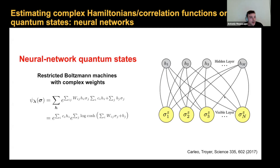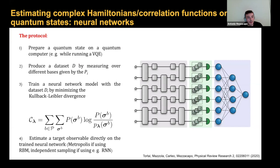It's a parameterization of the amplitude of a wave function expressed in terms of a neural network with complex weights. The neural network in this case is a restricted Boltzmann machine — a shallow neural network. What they showed three years ago is that this variational ansatz does a fairly good job at capturing ground state properties of interacting many-body systems. Why is this interesting, and what does it have to do with this talk? You can use it to estimate observables on a quantum computer.